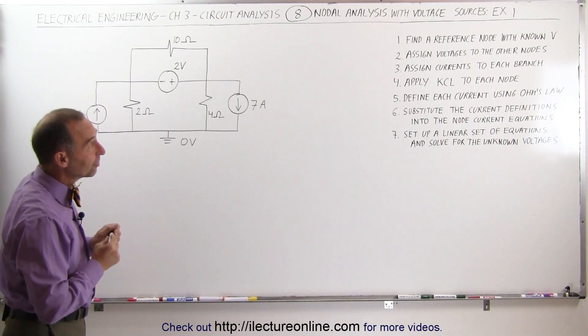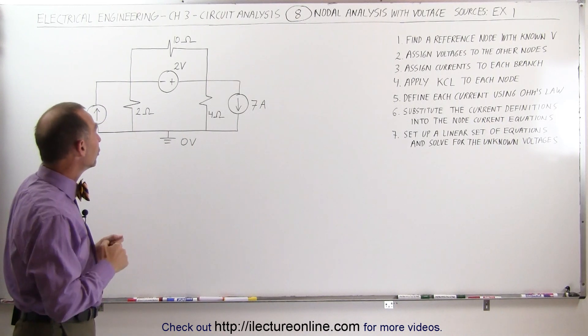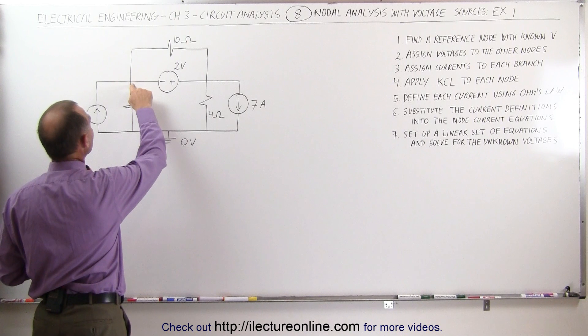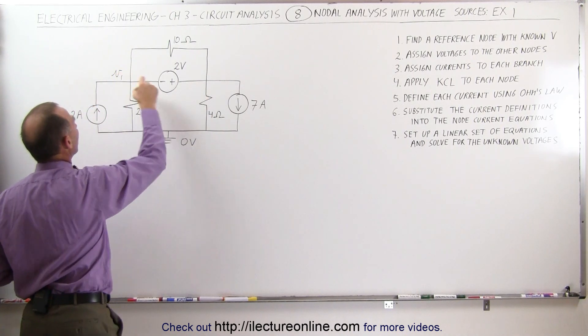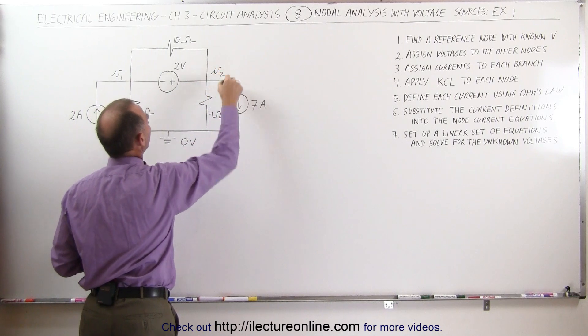The next step is to assign voltages to the other nodes, and notice there is a node right here, there's a node right there, so we call this first node V1, second node V2.